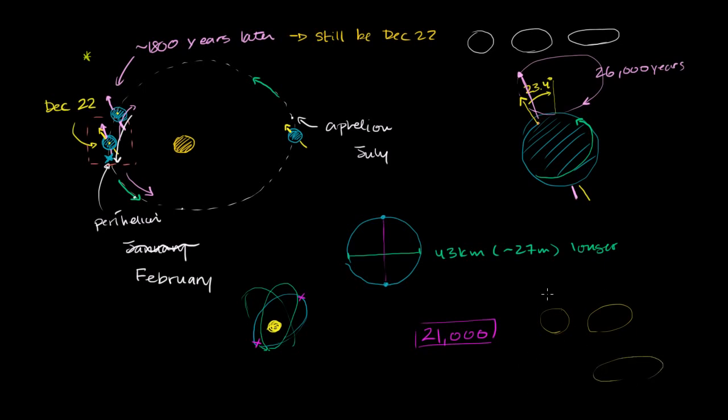And so these cycles occur, so these eccentricity cycles occur over approximately 100,000 years. And so to revisit the Milankovitch cycles, and once again, this is a theory.